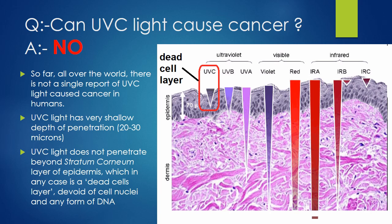Can UVC light cause cancer? The answer is no. So far, all over the world, there is not a single report of UVC light caused cancer in humans. UVC light has very shallow depth of penetration, usually 20 to 30 microns. UVC light does not penetrate beyond the stratum corneum layer of the epidermis, which is in any case a dead cell layer devoid of cell nuclei and devoid of any form of DNA. So UVC is least likely to induce cancer — there is not a single world report.